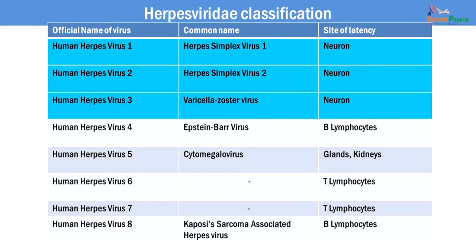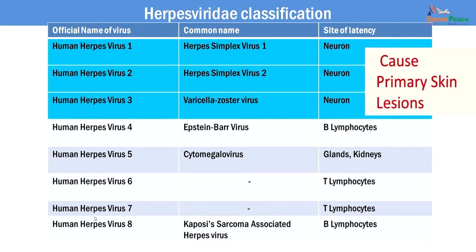There are eight different herpes viruses which cause infections in human beings, labeled as human herpes virus 1 through 8. They are commonly known by their common names: herpes simplex virus 1 for HHV-1, herpes simplex virus 2 for HHV-2, and varicella zoster virus for human herpes virus 3. These three viruses are basically responsible for primary skin lesions. These viruses undergo latency in neurons and can be reactivated with provocative stimulus. The other herpes viruses sometimes cause cutaneous manifestations, but not through primary replication in epidermal cells — rather through the human body's immune response to infection.